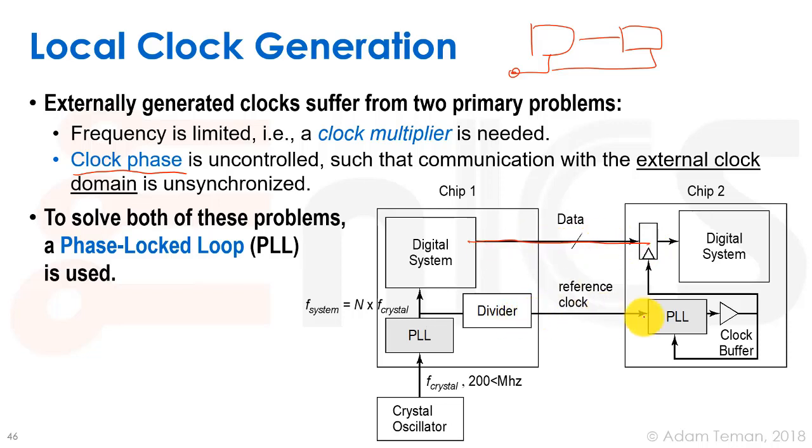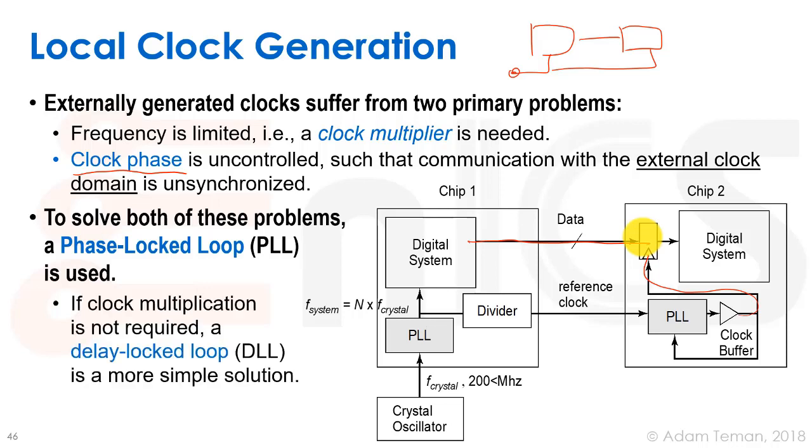These are asynchronous, they don't know anything about each other. The clock divider will go into the PLL, which will fix the phase between them, enabling us to have a synchronous path between the two. If clock multiplication is not required, we can use a delayed lock loop instead. It's a more simple solution that just delays the clock to fix the phase difference.